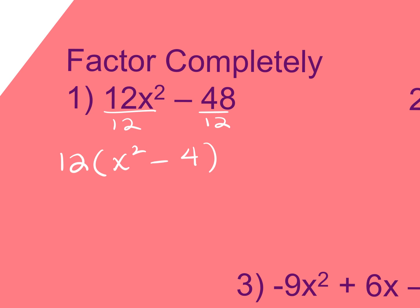Notice what remains in the parentheses after division is the difference of two squares, so I need to keep going. I'm going to square root the x squared and square root the 4. Don't forget about the GCF — it needs to keep coming down into your answer. If you forget it on the quiz, you will lose points. The square root of x squared is x, placed at the beginning of each binomial. One gets a plus sign, one gets a minus sign. The square root of 4 is 2, so put positive 2 and negative 2. Done.